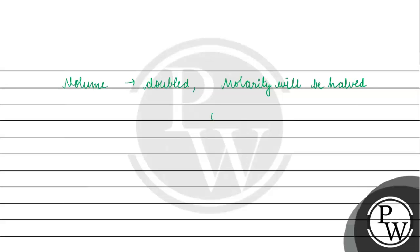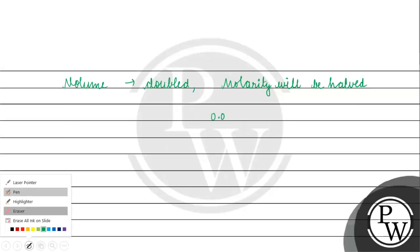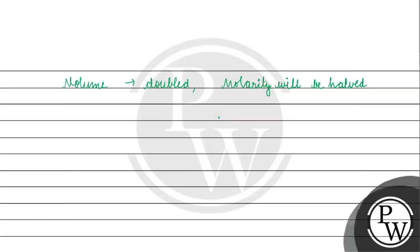The first solution, Hg(NO₃)₂, was 0.1 molar initially. The nitrate ion concentration for that solution was 0.1 molar.